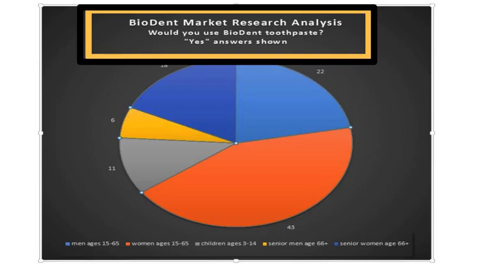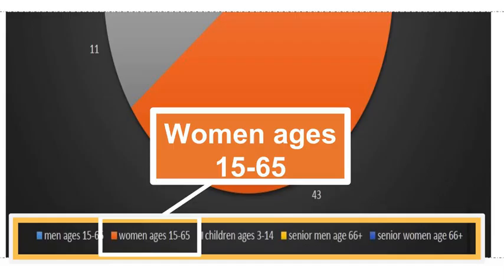Look at this example pie chart. The first rule to reading any chart is to look at what can be learned from the title and the numbers displayed. This shows the results from our surveys and market research for Biodent toothpaste. At the end of the survey, people were asked if they would use Biodent toothpaste. Yes answers are shown by age category. Orange is certainly a dominant color, and it looks like 43% of women ages 15–65 were likely to use Biodent toothpaste.